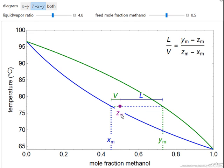That means on a t-x-y diagram, because we're at a fixed pressure, that means we only have one point where we can have overall mole fraction 0.5 and have a liquid to vapor mole ratio of 4.8.